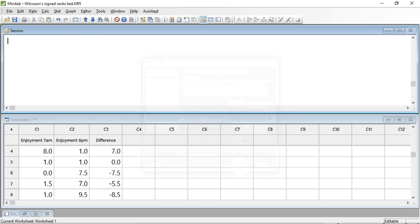And we see that the differences between the data values have been placed in column C3. We can now do the test.